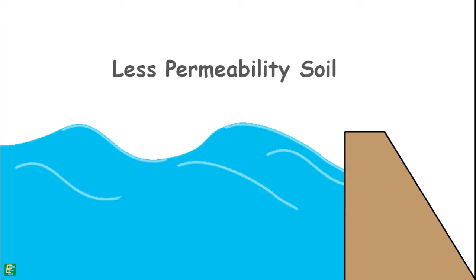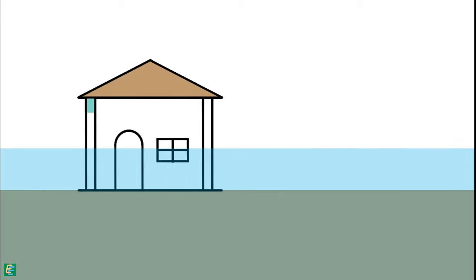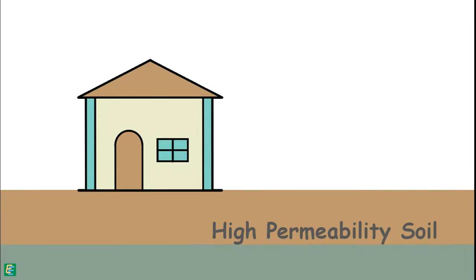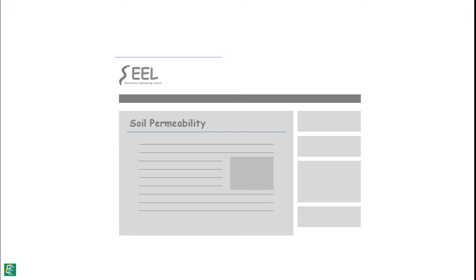Depending upon the work, sometimes we need to use the soils which restrict the flow of water, which are low permeability soils, and sometimes we need to use soils which facilitate the flow of water, which are high permeability soils. Read Soil Permeability on ElementaryEngineeringLibrary.com, link is in the description. Thank you.